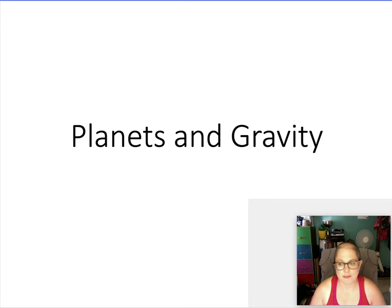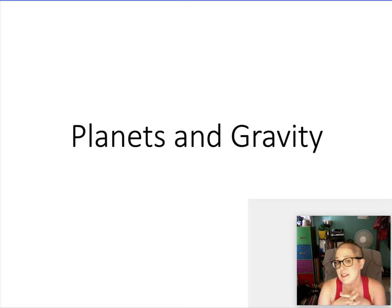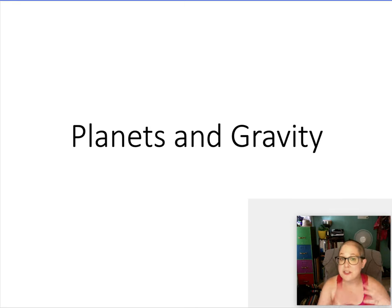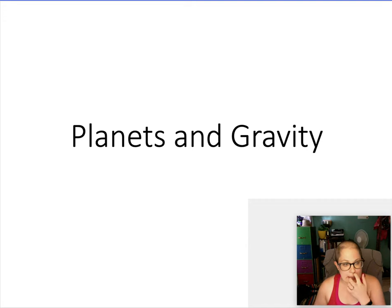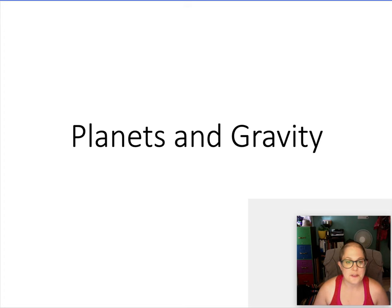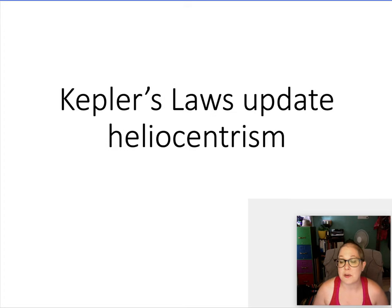Hello, welcome back. In the last lesson you learned about how astronomers moved from the Earth-centered, or geocentric, model of the universe to a sun-centered, or heliocentric, model. We're going to continue down that line and look at some observations and theories that came out of that. The first thing we're going to talk about is Kepler's laws and how this updates the idea of heliocentrism.